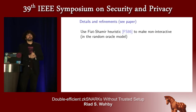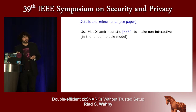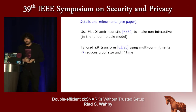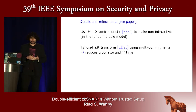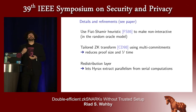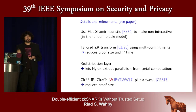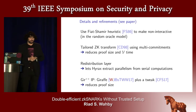I've described everything in terms of interactive proofs, and all of the interactive proofs are public-coin. So we can make them non-interactive using the Fiat-Shamir heuristic. We give several other refinements in the paper. First, we use multi-commitments to reduce proof size and verifier work in the sum-check invocations. Second, we develop what we call a redistribution layer, which lets Hyrax extract parallelism from serial computations. And finally, we tweak the Giraffe interactive proof — which is prior work — to further reduce the proof size.